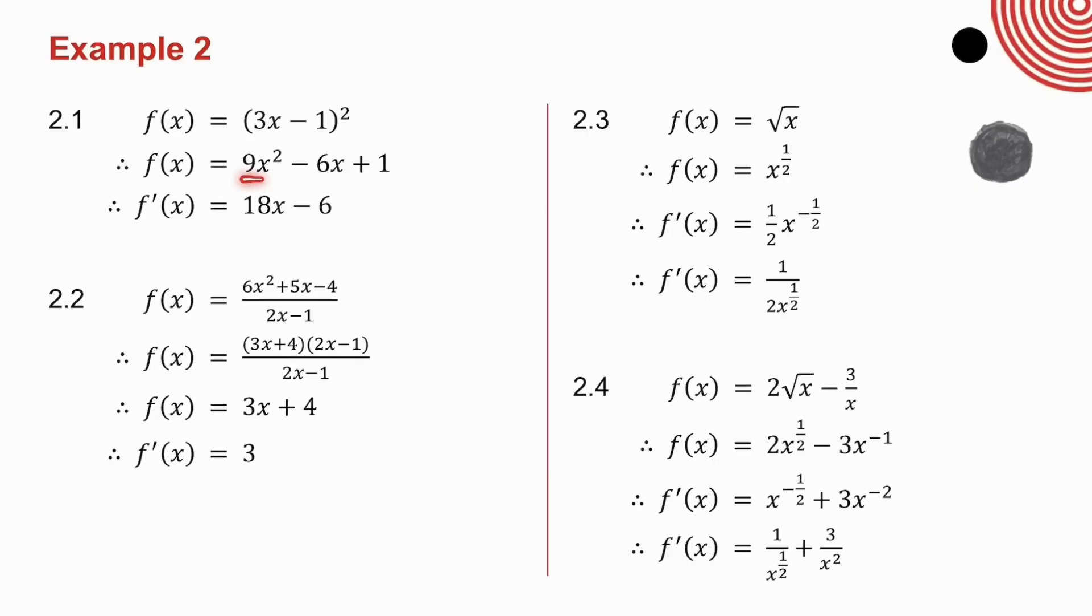2.1. I squared the bracket. 2 times 9, 18, x to the power 1. Derivative of minus 6x is the coefficient minus 6. Derivative of plus 1 is 0. Notice that's still f of x. All I did was I squared the bracket. When I took the derivative, it then became f dash x.